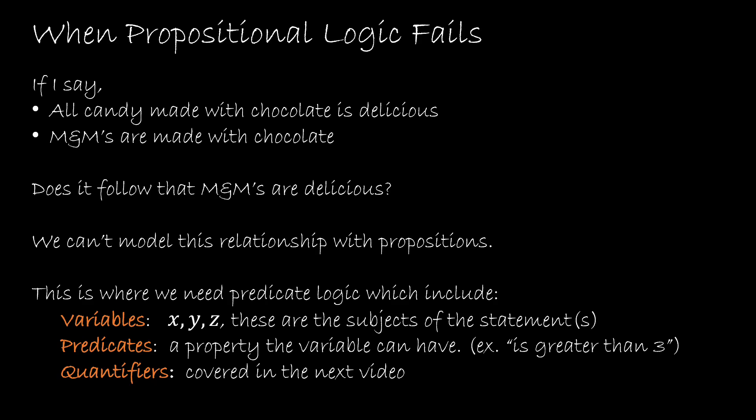We've been working very hard at understanding propositions and we know all the connectives. However, if I were to say all candy made with chocolate is delicious, and M&Ms are made with chocolate — does it follow that M&Ms are delicious? You might say yes, or you might say we don't have enough information, but the point is I can't model this relationship with propositions that I already know. This is where we need predicate logic.